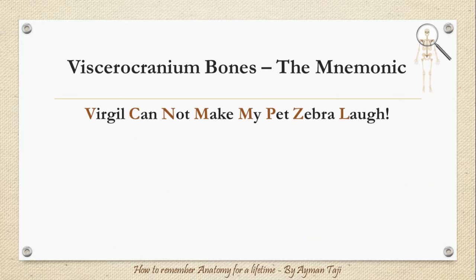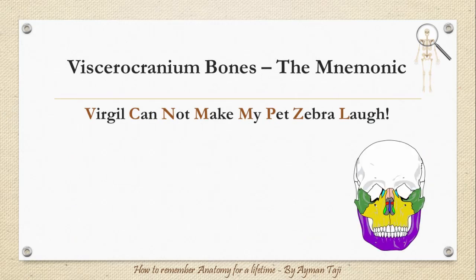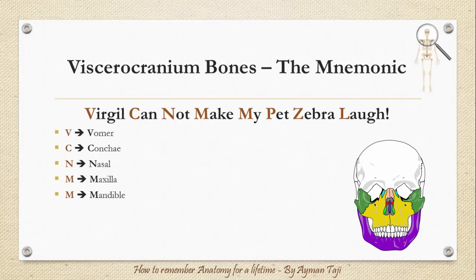To remember them, just remember that 'Virgil cannot make my bed zebra laugh.' So: V for vomer, C for conchi, N for nasal, M for maxilla and mandible, B for bed — palatine, Z for zygomatic, and L for lacrimal. Now it's much easier and faster to remember all of them in less than a minute.